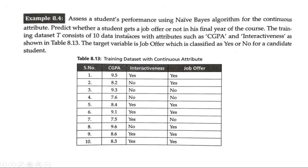From the table, it's obvious that CGPA is a continuous attribute. In the last session we applied Naive Bayes with a similar training dataset, but CGPA was discrete — it had only three possible values: greater than 9, greater than or equal to 8, or less than 8. In this example, CGPA has different continuous values like 9.5, 8.2, 9.3, 7.6, giving a range of continuous values.